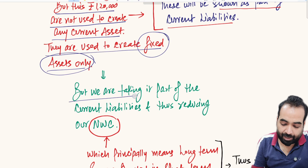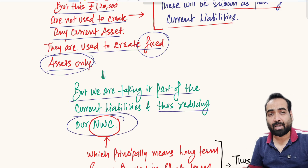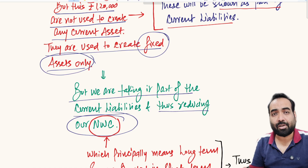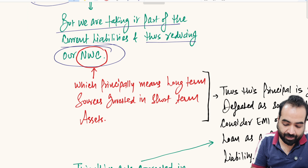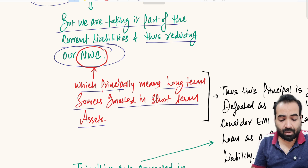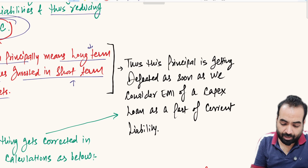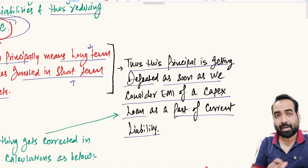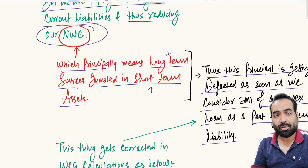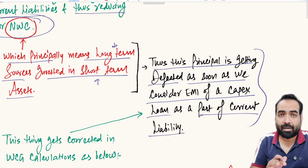By including this amount in current liabilities, we are increasing current liabilities with no corresponding impact on current assets, thereby reducing our NWC. This is a principal disconnect. NWC represents long-term sources invested in short-term assets. But as soon as we consider the EMI of a capex loan as part of current liabilities, we are defeating this principle. Counting the short-term portion of long-term debt in current liabilities violates the fundamental thumb rule of NWC.